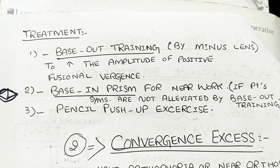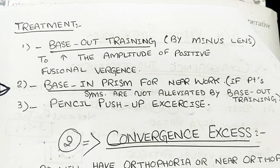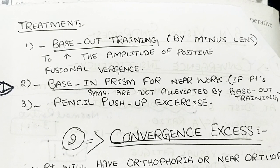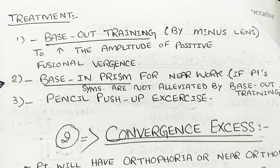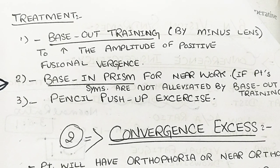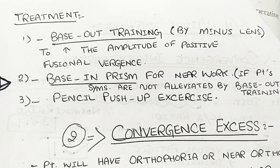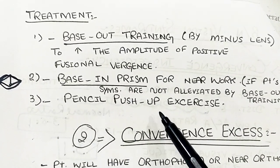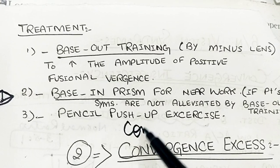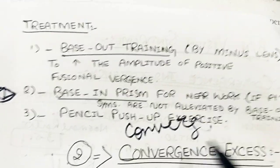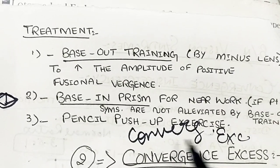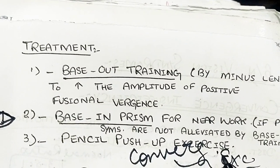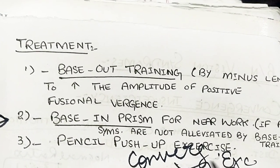Convergence insufficiency can also be treated by base-out training — meaning by minus lenses we induce exercise especially at near, inducing accommodation and accompanying accommodative convergence to relieve convergence insufficiency. Another exercise is the pencil push-up exercise, which is a convergence exercise we guide patients to perform for relief of convergence insufficiency.